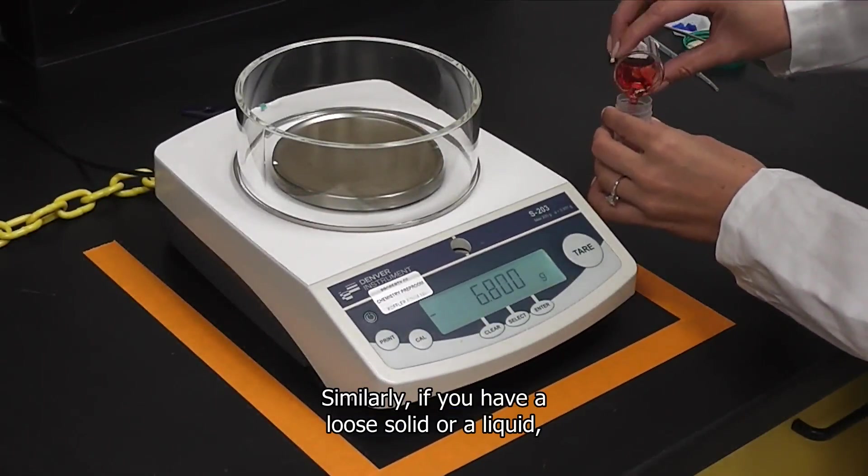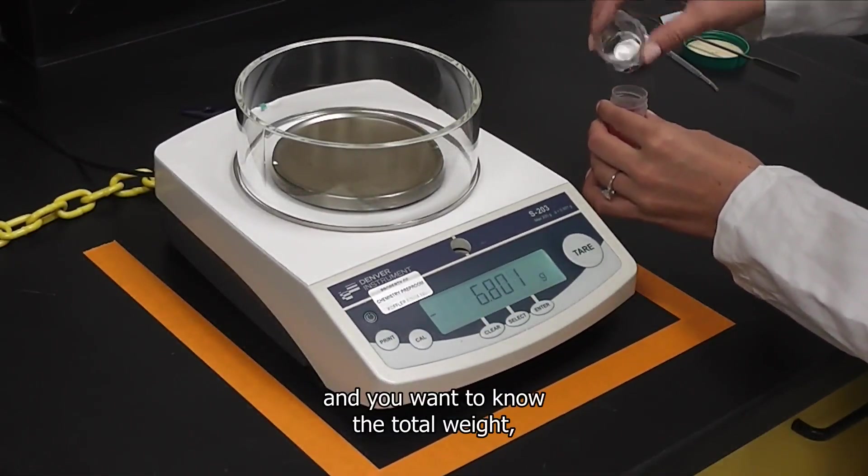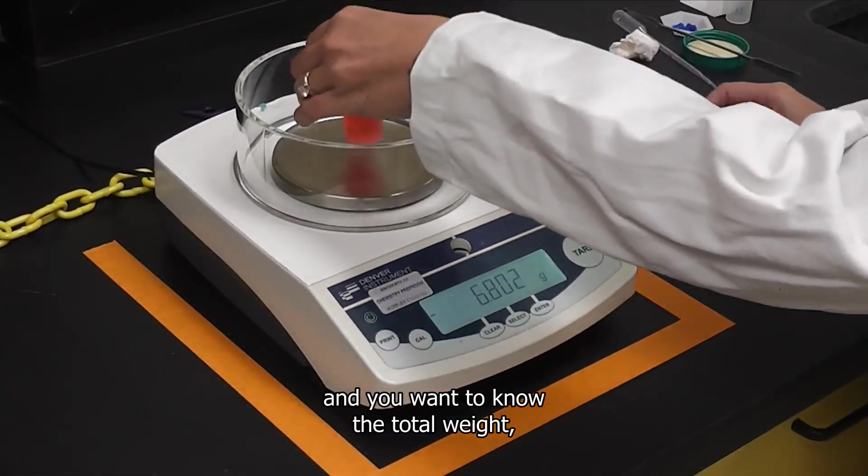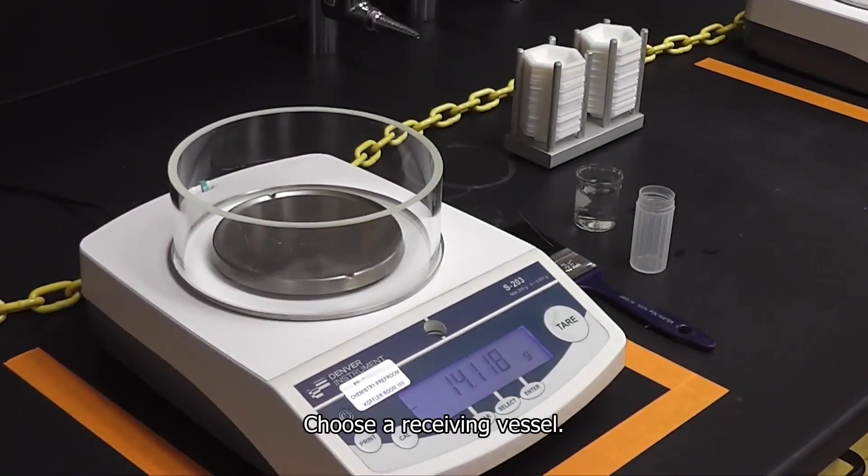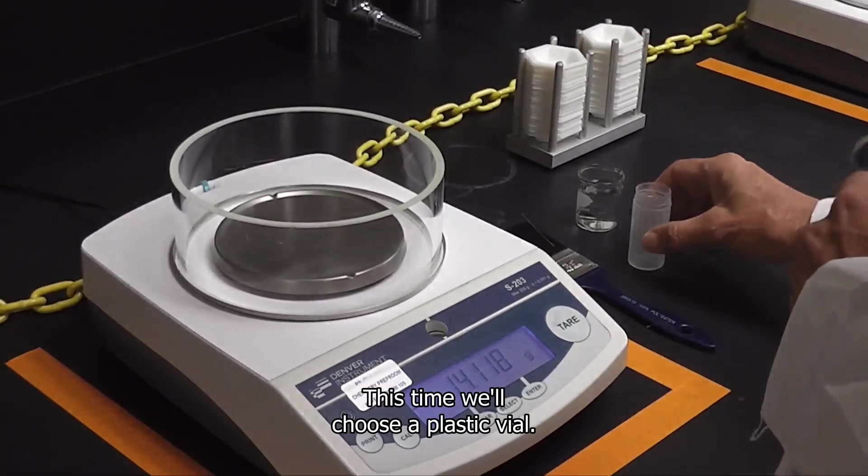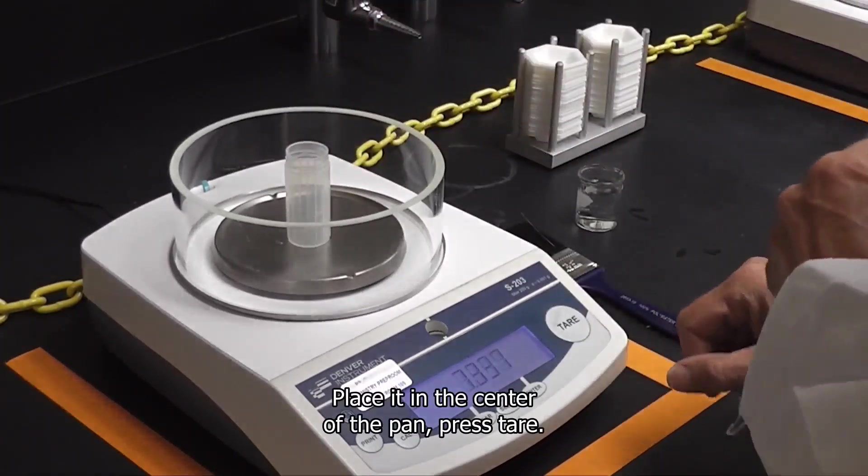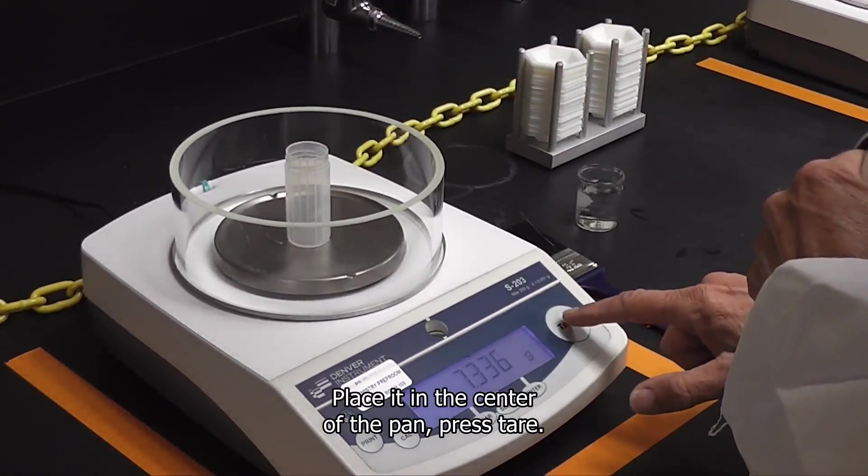Similarly, if you have a loose solid or a liquid and you want to know the total weight, you can use the following technique. Choose a receiving vessel, this time we'll choose a plastic vial. Place it in the center of the pan, press tare.